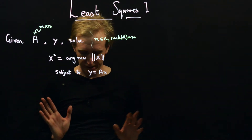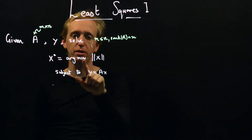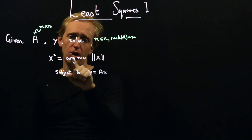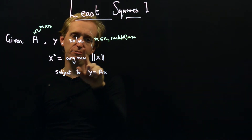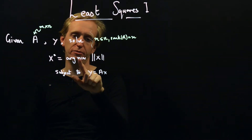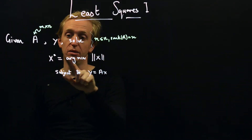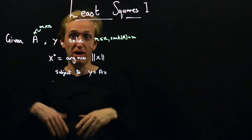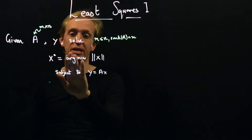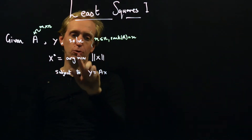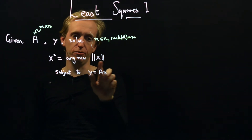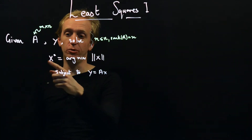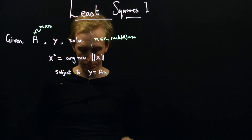What's this arg min? Min means we want to minimize the norm or the size of x. Arg just means rather than looking at the minimum value of the norm of x, we want to know what is the x that minimizes this — the argument that minimizes the norm of x. So if we just had min, the output would be the size of the norm; with arg min we get the actual x that makes this as small as possible.